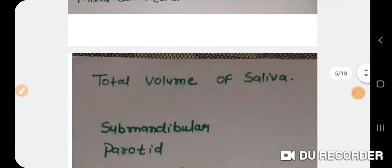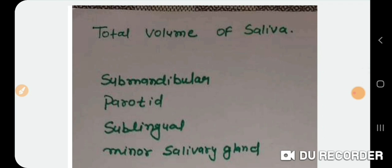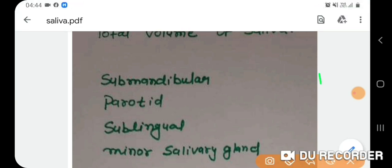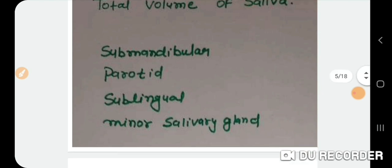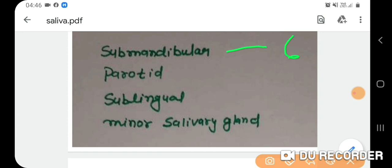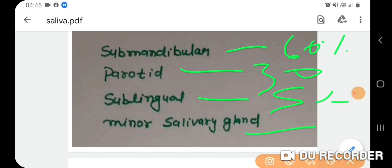Regarding the total volume of saliva, the distribution by gland is: the submandibular gland secretes approximately 60% of total saliva volume, the parotid gland secretes 30%, the sublingual gland secretes 5%, and the minor salivary glands contribute approximately 1%.